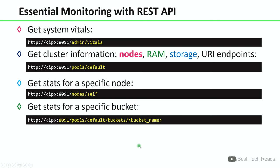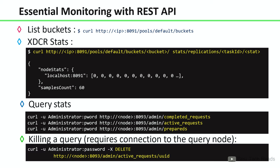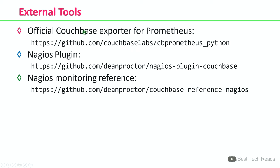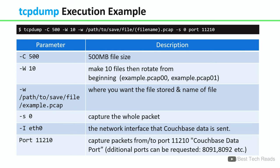These are the commands to monitor using the REST API. You can integrate monitoring with external tools — for example, if you use Grafana you can visualize data and metrics with graphs. You can also schedule email alerts. External tools include the official Couchbase exporter and the Nagios plugin. For troubleshooting connectivity issues, the Couchbase support team may ask you to generate a TCP dump. The command uses -c 500 for a 500 MB file, -w 10 to make 10 files then rotate, and -w to specify where to store the file. Thanks for your time, see you in the next lecture.